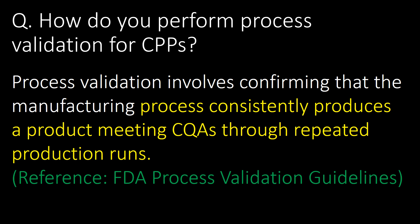How do you perform process validation for CPPs? Process validation involves confirming that the manufacturing process consistently produces a product meeting CQAs through repeated production runs. Reference: FDA's process validation guidelines.